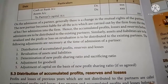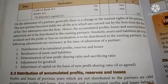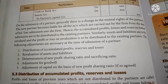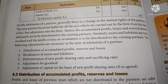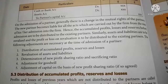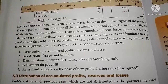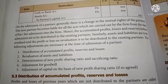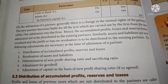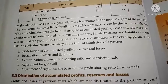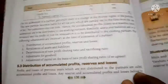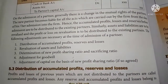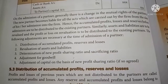Number four, adjustment of goodwill. And number five, adjustment of capital on the basis of new profit sharing ratio. These are the necessary adjustments that should be made when a new partner joins the partnership firm. First, we discuss about the distribution of accumulated profit, reserve and losses.